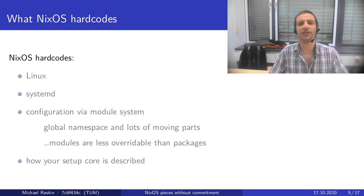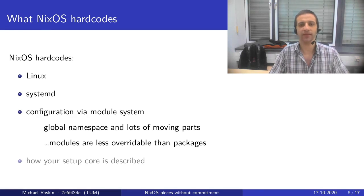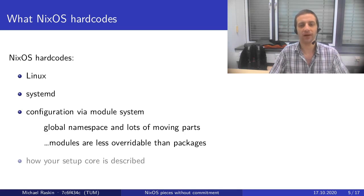First of all, NixOS hardcodes quite a few things. It is written around a Linux kernel and systemd as the init system. The configuration of NixOS — this declarative thing — is done via the module system, which is nice for simple things and propagates your preferences across the configuration correctly. But when you do complicated things, you notice there are a lot of moving parts, a global namespace, and they sometimes touch in the same place. The interaction complexity comes back.